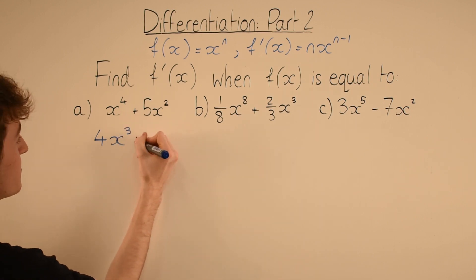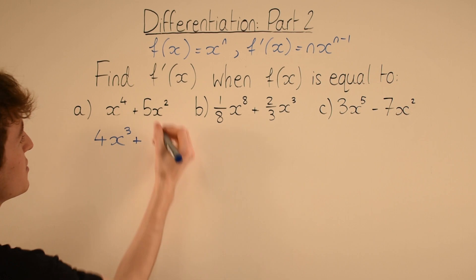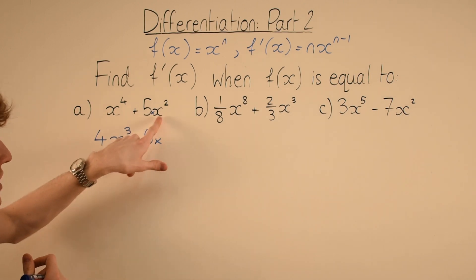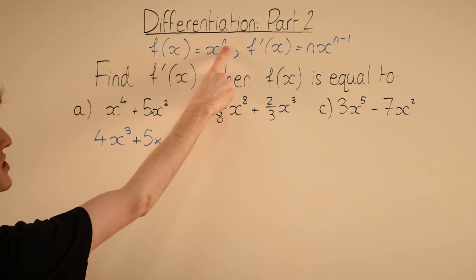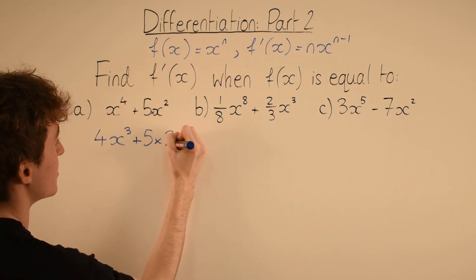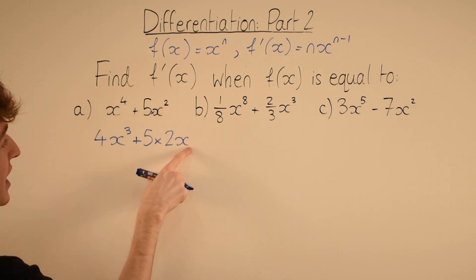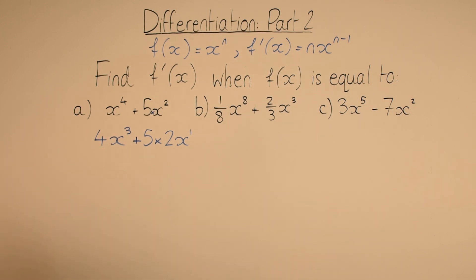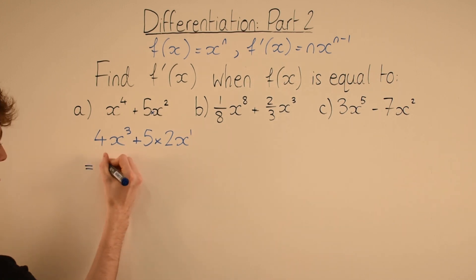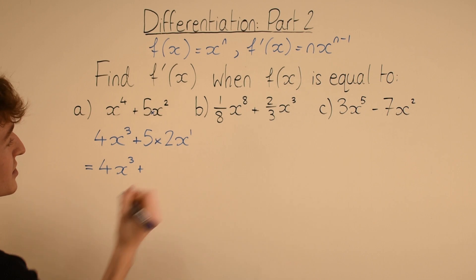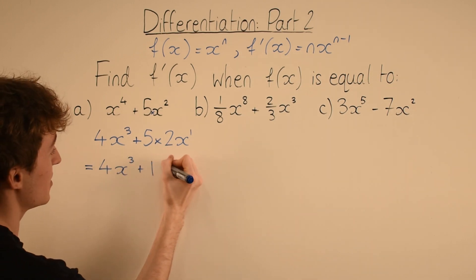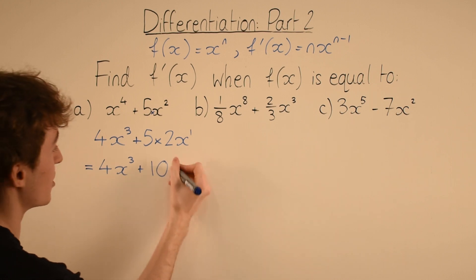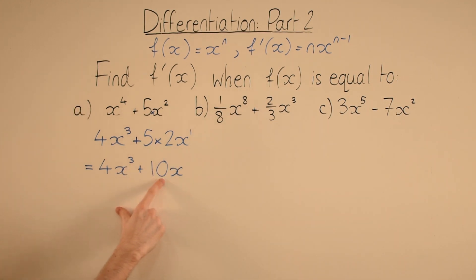Now the next term. Remember, 5x squared really means 5 multiplied by x squared. So we write 5 times, then differentiate x squared: n is 2, so we bring the 2 in front and subtract 1 from the power, giving x to the 1. We can simplify: 5 multiplied by 2 becomes 10, and x to the power of 1 is just x. So the final answer is 4x cubed plus 10x.